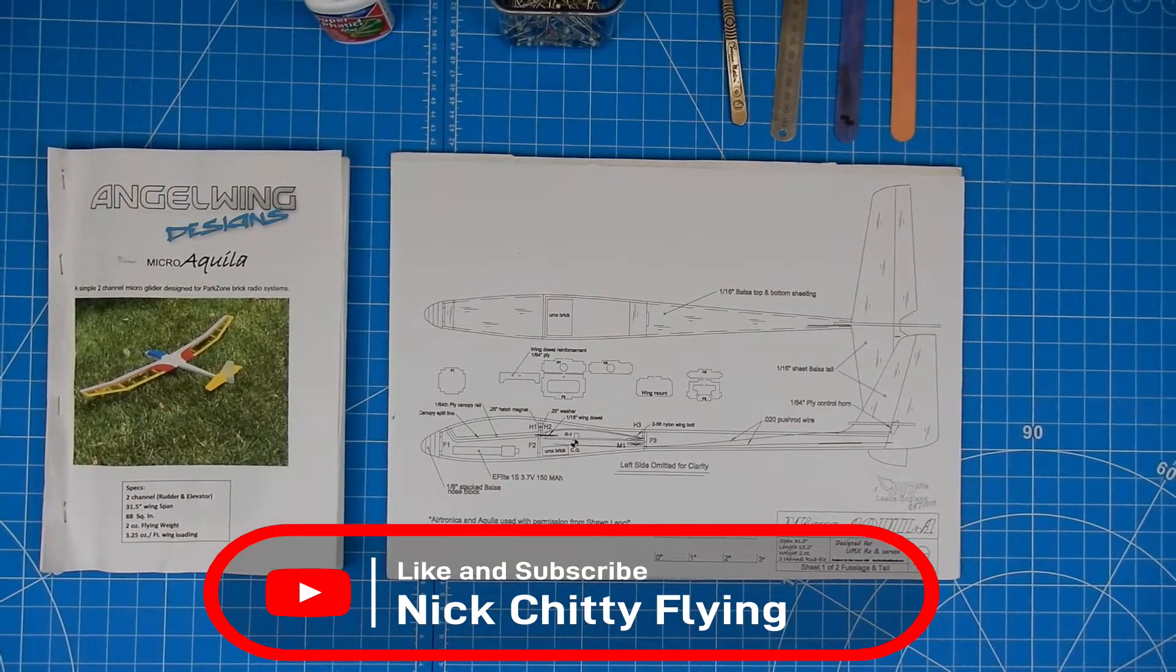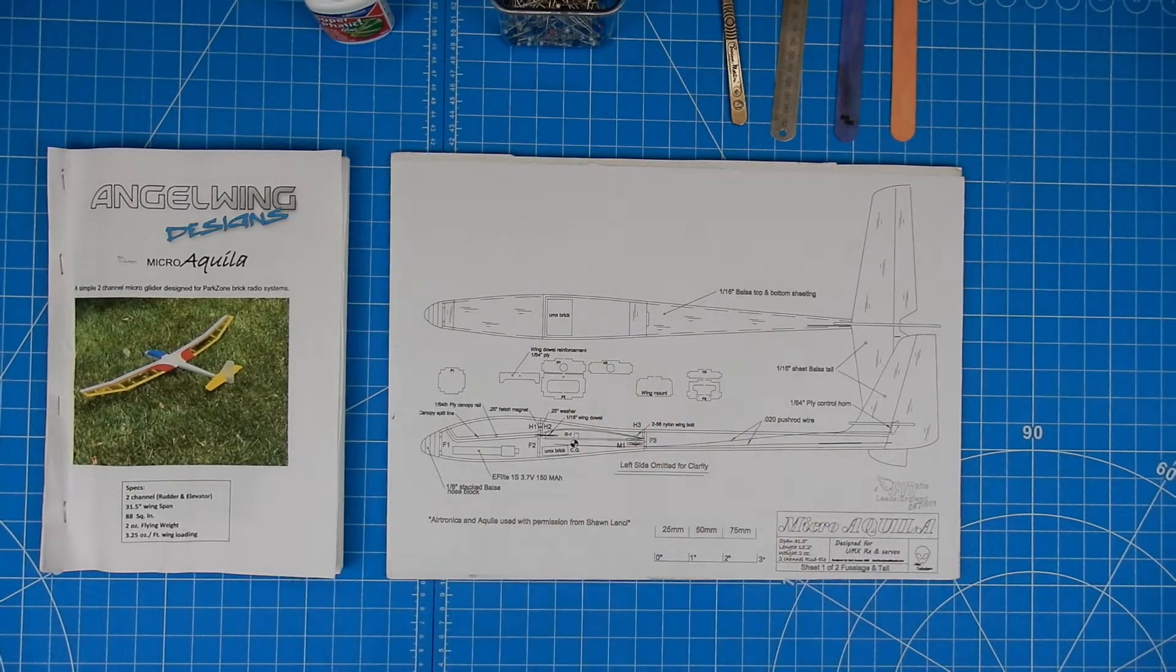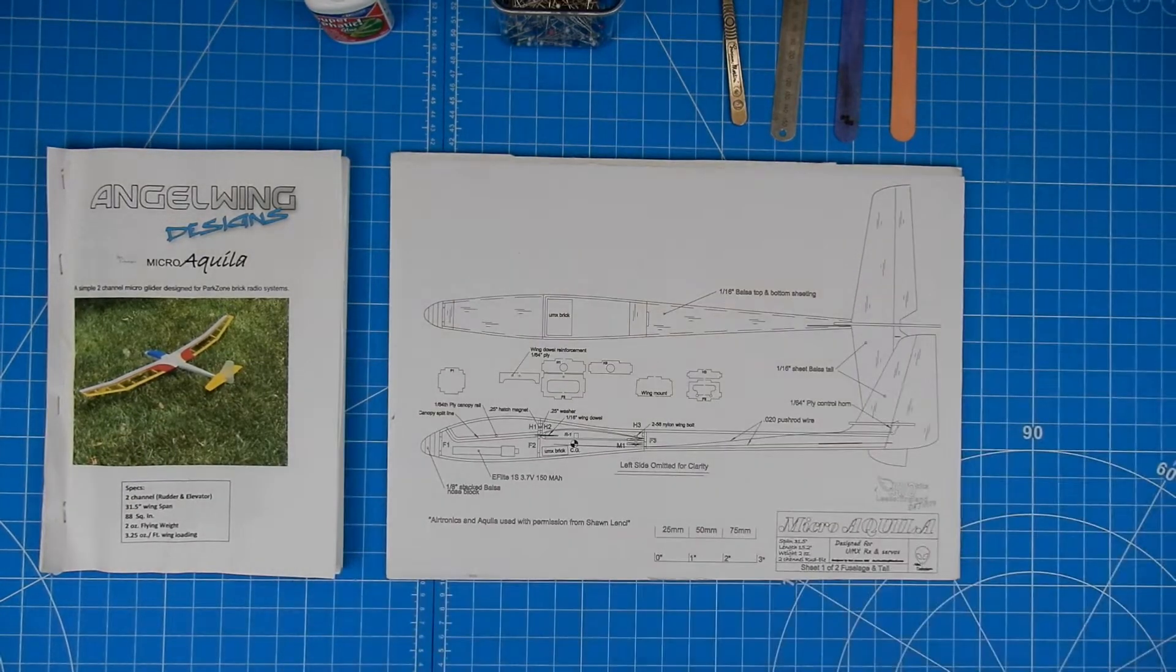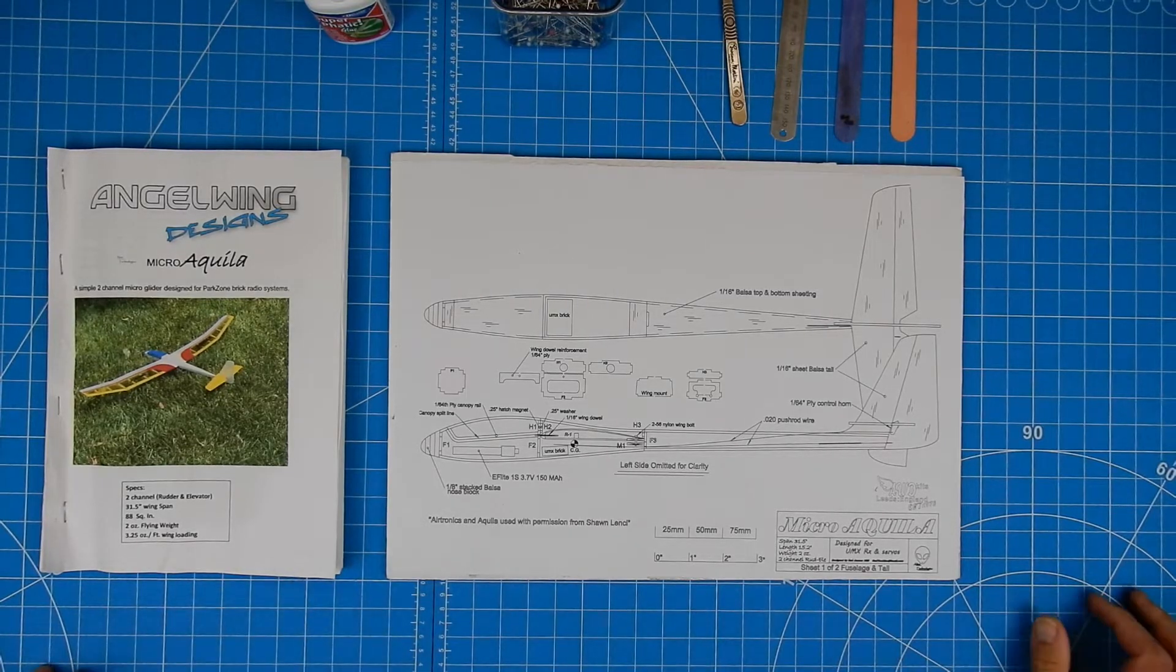Okay, so let's crack on with the Micro Aquila fuselage. Now, as in the instructions, they actually say you don't need to build on the actual plan. A lot of people ask me what I build a lot of my micro gliders on. I'm just using some foam board, this 5mm foam board, and it's actually the offcuts from making one of the boxes to travel the gliders round with.